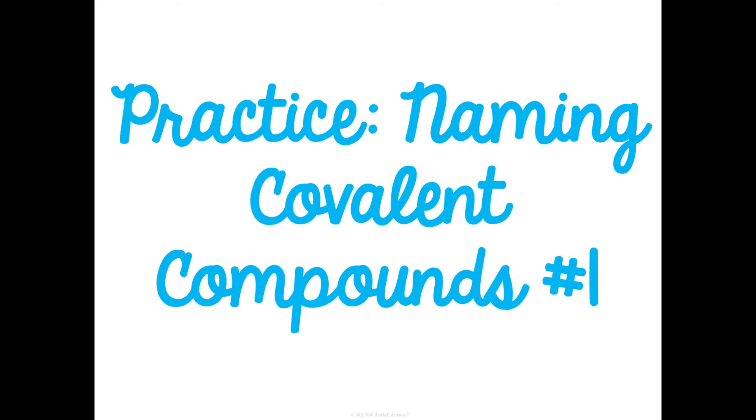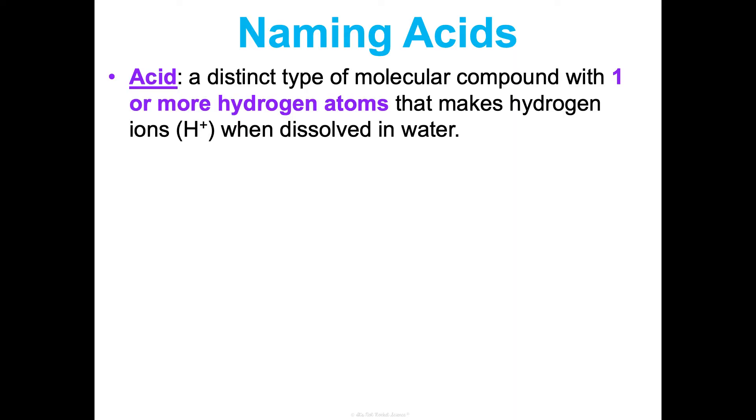And then one last thing I'm going to teach you as honor students is how to name acids. So an acid is a distinct type of molecular compound. So it's a distinct type of covalent compound that has one or more hydrogen atoms that makes hydrogen ions, so H+, when it's dissolved in water. So when we take this compound, we dissolve it in water, those hydrogen ions leave it, and that's what makes this an acid. And we're going to talk about this more in our acids and bases unit. But there are special rules for how to name these because they're a little bit funky. So let me just give you some examples, and then I'll give you some steps. I think that'll be the easiest way to do this. So like hydrochloric acid refers to HCl in a water solution. So HCl, if we follow the covalent bonding rules, would just be hydrogen monochloride. But if I'm referring to HCl in water, dissolved in water, then I'm technically talking about hydrochloric acid.